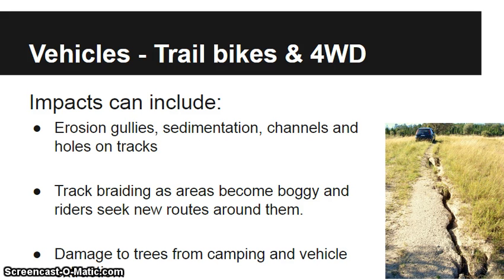Take the example of trail bikes and four-wheel drives. They have a variety of impacts including erosion, sedimentation, and creating track braiding. Then they become boggy over time, and when they become boggy, people drive around them and create new tracks — so more erosion.